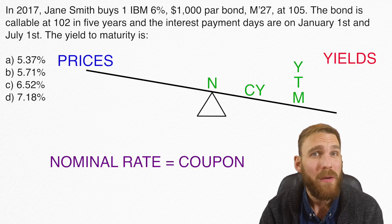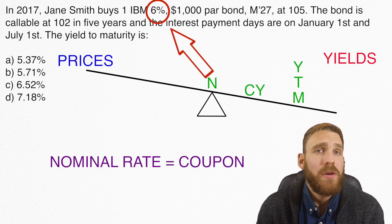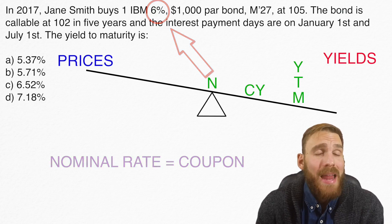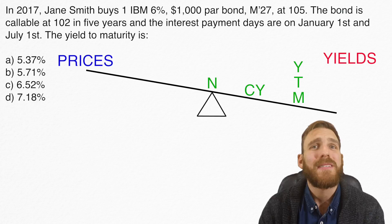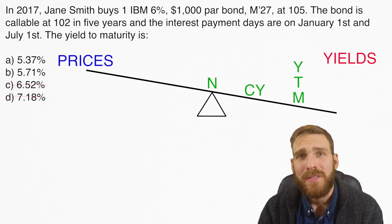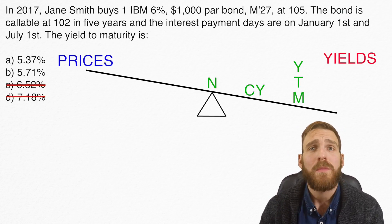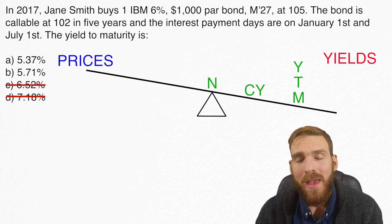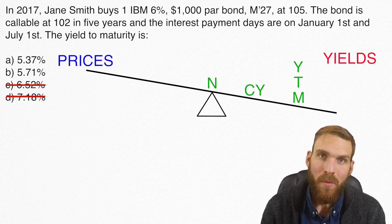So what does that tell us about the yield to maturity? If the price of the bond is above $1,000, that must mean the yield to maturity has to be less than the coupon rate. That middle coupon rate is 6%. So if the yield to maturity is below the coupon rate, it's got to be below 6%. That allows us to get rid of answer C and answer D — they're both above 6%. We know the yield to maturity has to be below 6%, and just by doing that one step it gets us down to a 50-50. We know it's got to be A or B.